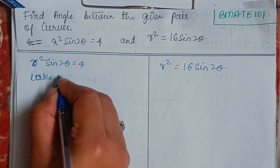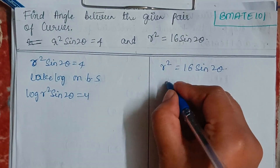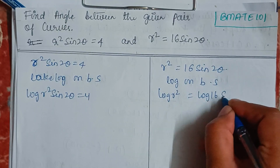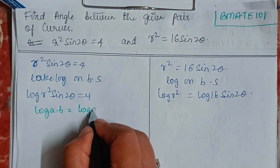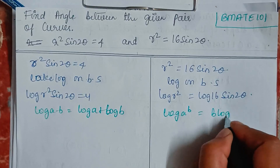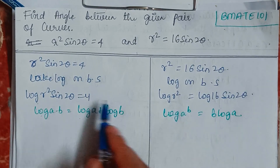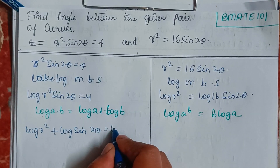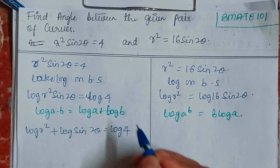First we take log on both sides of both equations. So the first equation becomes log(r² sin(2θ)) = log 4, and the second becomes log(r²) = log(16 sin(2θ)). We know that log(a·b) = log a + log b, and log(aᵇ) = b·log a.